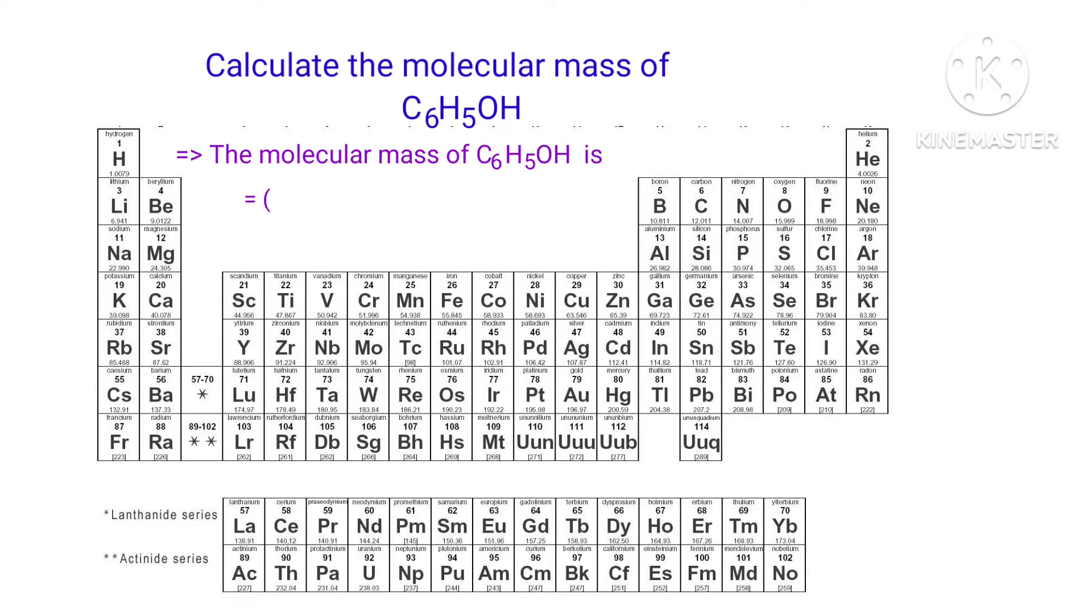So the molecular mass of C6H5OH is (12.011 × 6) + (1.0079 × 6) + 15.999, which equals 94.1124 grams per mole.